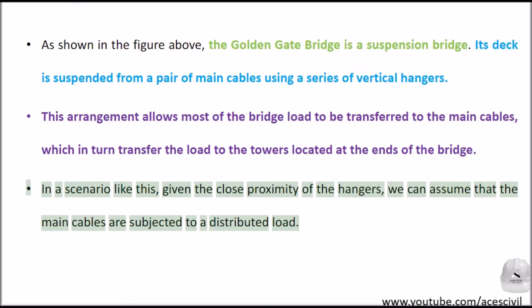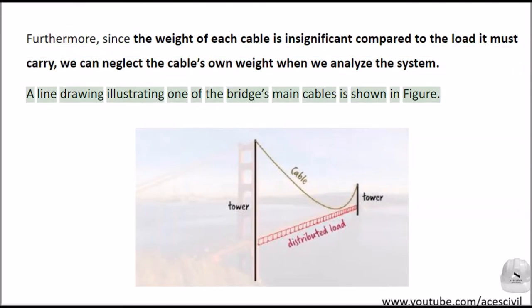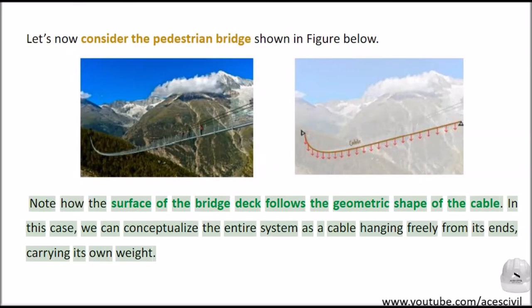In a scenario like this, given the close proximity of the hangers, we can assume that the main cables are subjected to a distributed load. Furthermore, since the weight of each cable is insignificant compared to the load it must carry, we can neglect the cable's own weight when we analyze the system. A line drawing illustrating one of the bridge's main cables is shown in figure.